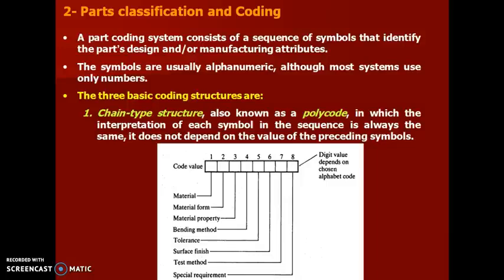A part coding system consists of a sequence of symbols that identify the part's design or manufacturing attributes. The symbols are usually alphanumeric, although most systems use only numbers. There are three basic coding structures. The first one is the chain type structure, also known as polycode, in which the interpretation of each symbol in the sequence is always the same and does not depend on the value of the preceding symbol.